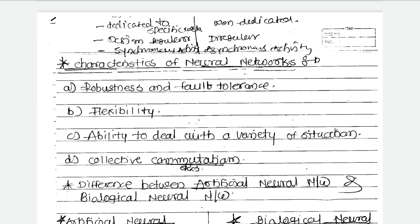Hello students, today we are going to discuss the characteristics of neural networks. What is a neural network and what is a biological neural network — we discussed this in the last lecture. A neural network is nothing but a number of neurons which are interconnected to each other. Now here we are going to discuss artificial neural networks.